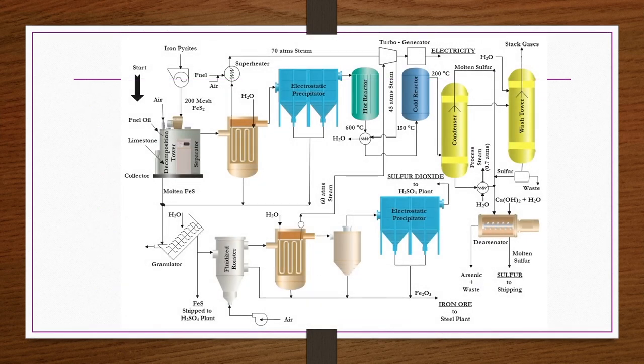Now we see the process by a flowsheet. The iron pyrites used must be dry enough, as moisture interferes with important reactions. If not dry, flue gases in a rotary kiln can be used to dry them. After drying, the ore is size-reduced to approximately 200 mesh size.